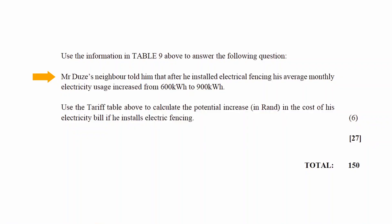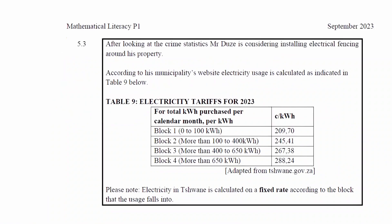We have to use the information in Table 9 to answer the following questions. Mr. Toosey's neighbor told him that after he installed electric fencing, his average monthly electricity usage increased from 600 kilowatt hours to 900 kilowatt hours. We have to use the tariff table to calculate the potential increase in rands in the cost of his electricity bill if he installs electric fencing.